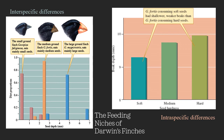Because of selective pressure from competition for food, the finches evolved to have different feeding niches. The large ground finch, Geospiza magnirostris, eats the big seeds; the medium ground finch, fortis, eats medium-sized seeds; and the small ground finch eats the small seeds. The size of seeds that can be eaten is estimated by looking at the depth of their beaks. Even within the species, beak size was affected by the composition of the diet — birds eating soft seeds had smaller beaks, while those eating hard seeds had the deepest beaks.